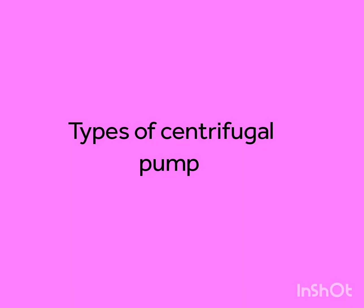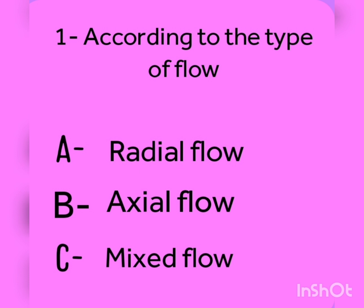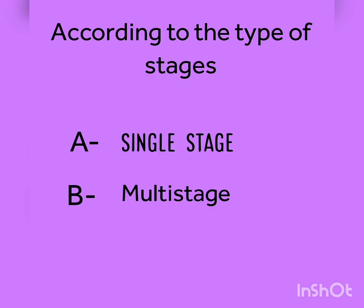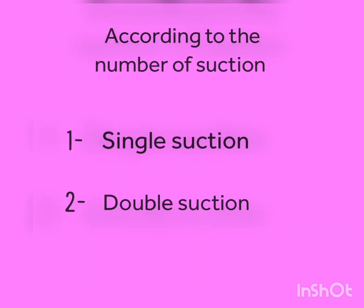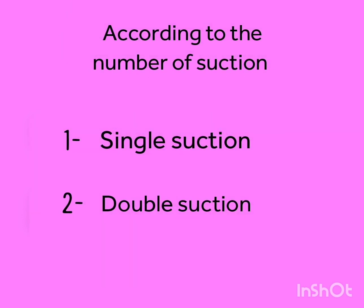Types of centrifugal pump: According to the type of flow — radial flow, axial flow, mixed flow. According to the type of stages — single stage and multi-stage. According to the type of volute — single volute, double volute. According to the number of suctions — single suction and double suction.